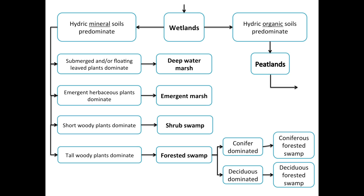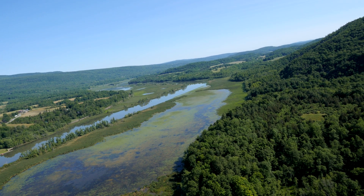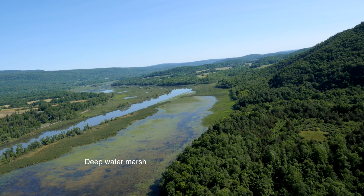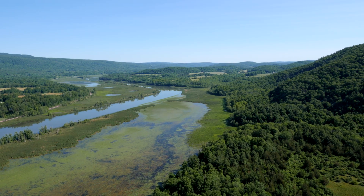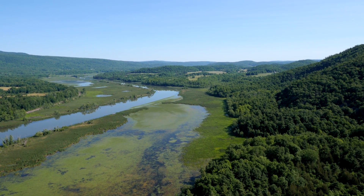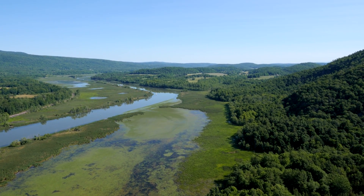If the answer to the soil question is mineral, the wetland will be a swamp or a marsh and is named and classified based on the physical characteristics of the dominant vegetation. A deep water marsh will have submerged or floating leaf plants, including common yellow pond lily, fragrant water lily, water shield, and coontail.